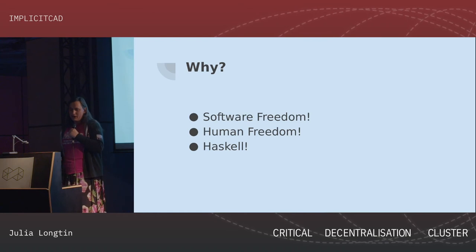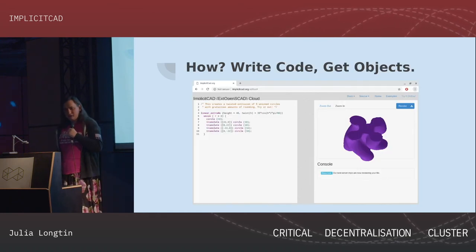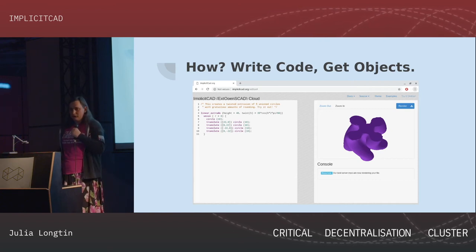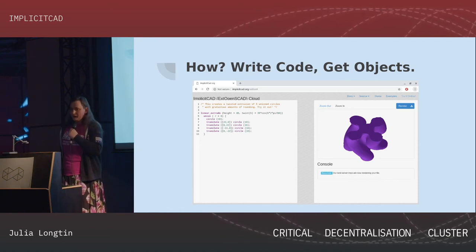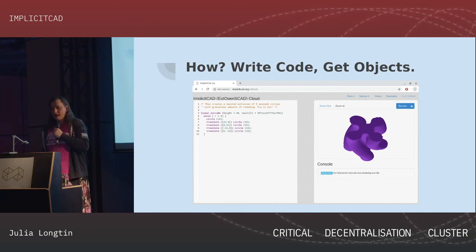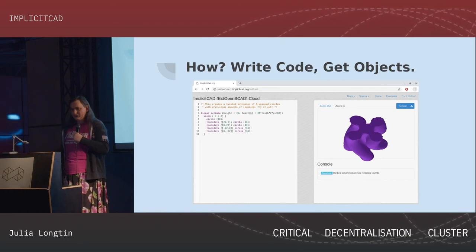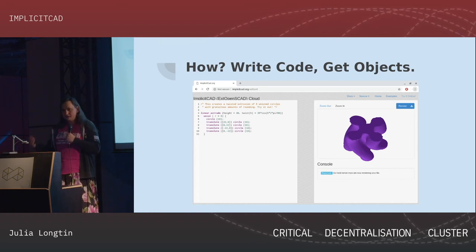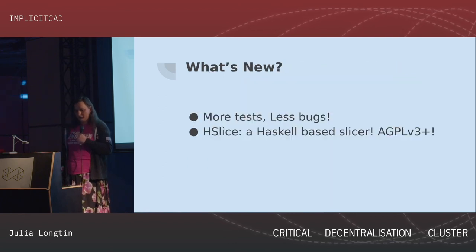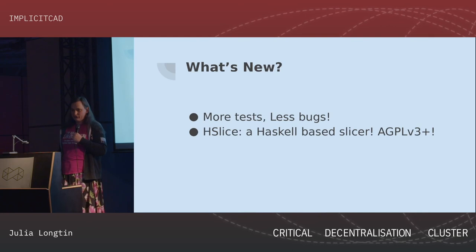ImplicitCAD is a programmatic language. As you can see here, this is the ImplicitCAD website — you can put in code on one side, literally just hit a button, and a piece of our server will split off and give you a 3D model. You don't have to install it, because installing Haskell can get very complicated. We put together this website so you can just put something in, get an object out, and feed that directly to your 3D printer.